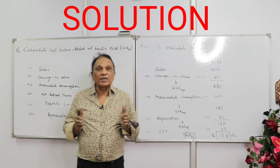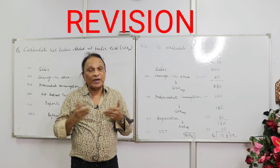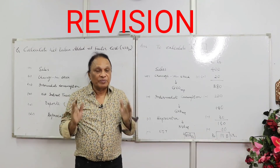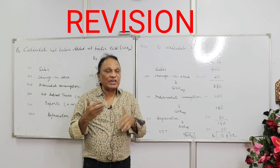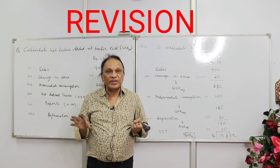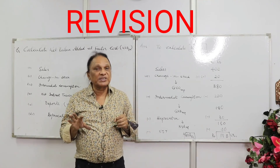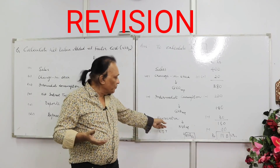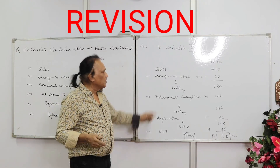Once again: sales plus change in stock gives gross value of output at market price. Subtract intermediate consumption to get gross value added at market price. Subtract depreciation to get net value added at market price. Subtract NIT to get net value added at factor cost. Key reminders: if given sales, don't add exports — already included. Consumption of fixed capital is another name for depreciation. NIT equals indirect taxes minus subsidies.